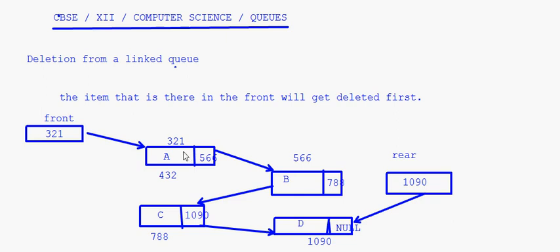Whenever we delete from a queue, deletion always happens from the front and insertion always happens at the rear. So now we are looking at deletion, which must be from the front. The first node to be deleted is this node right here.